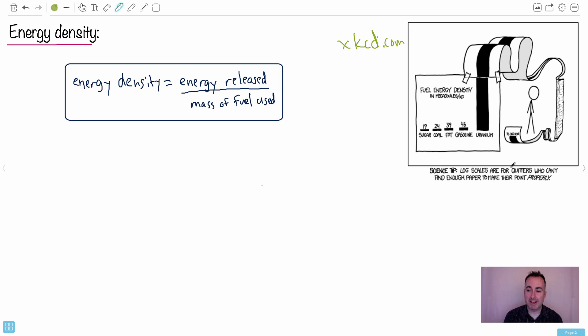You'll like the science tip: log scales are for quitters who can't find enough paper to make their points properly. Because if we look at the fuel energy density, if we look at megajoules per kilogram, you see energy density is all about the energy released per mass used. It's a way to compare different energy sources. So if you look at how much joules do you get versus how many kilograms do you need of this material or whatever to do it.